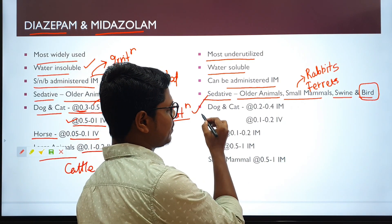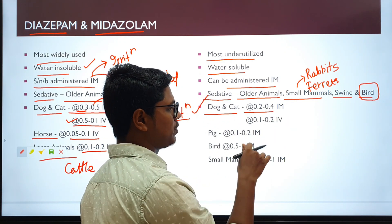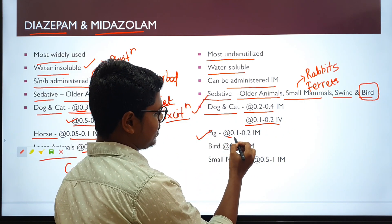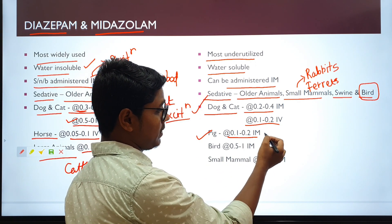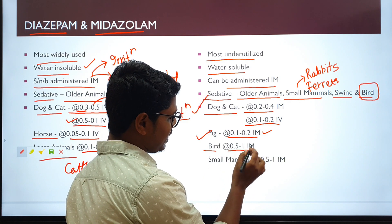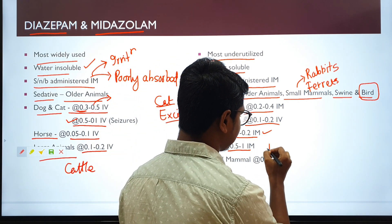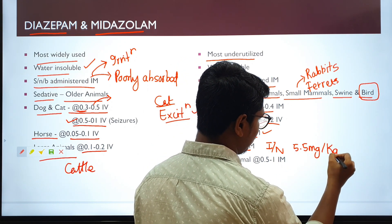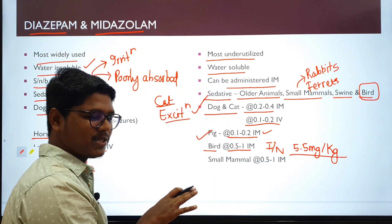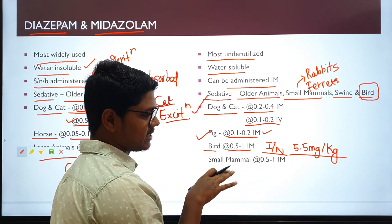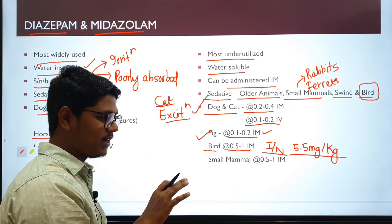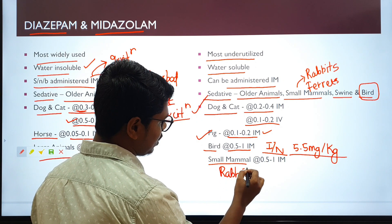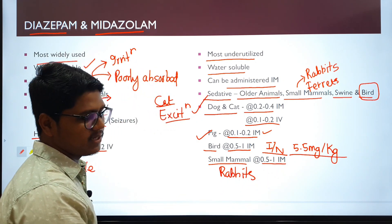For midazolam, in case of dog and cat, the intramuscular dose rate is 0.2 to 0.4 mg per kg body weight, while the intravenous dose rate is just half. In case of pig, the dose rate is 0.1 to 0.2 mg per kg body weight intramuscularly. In case of bird, 0.5 to 1 mg per kg body weight intramuscularly. Also, you can use intranasally, the dose rate is 5.5 mg per kg body weight. I already told this, this is a research product of our college, Odisha Veterinary College, and you can use intranasally. How to use it, in that video I have already discussed. I will give the link in the description. For small mammals like rabbits, the dose rate is 0.5 to 1 mg per kg body weight intramuscularly.